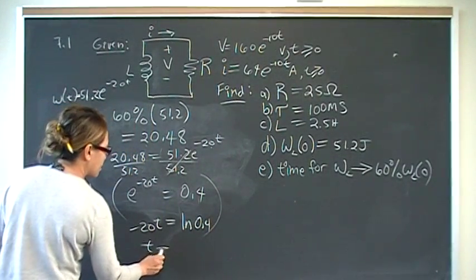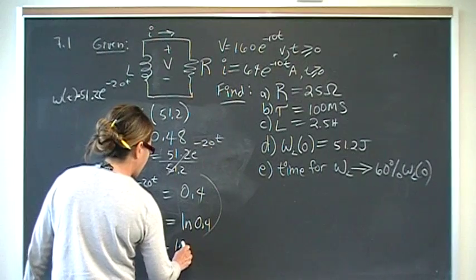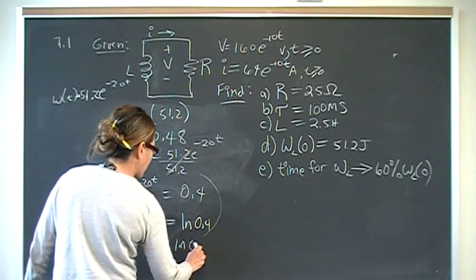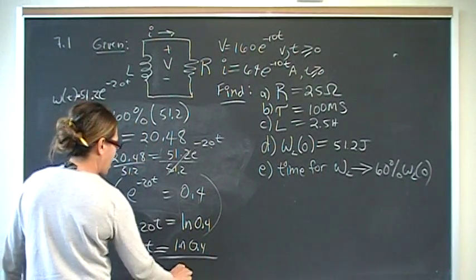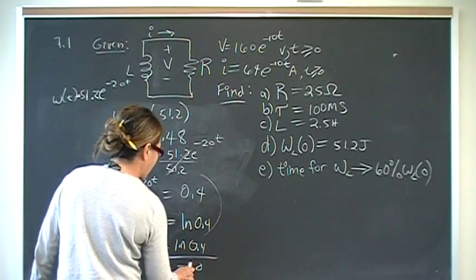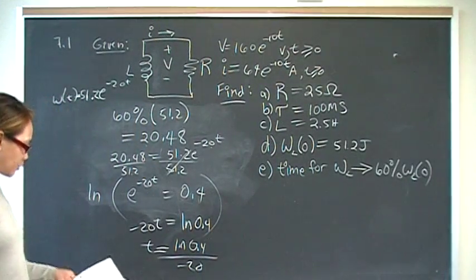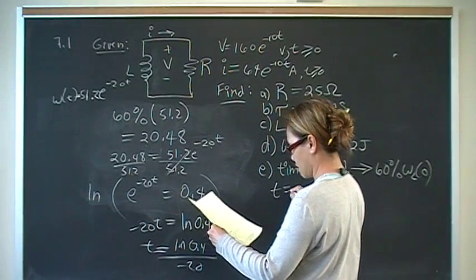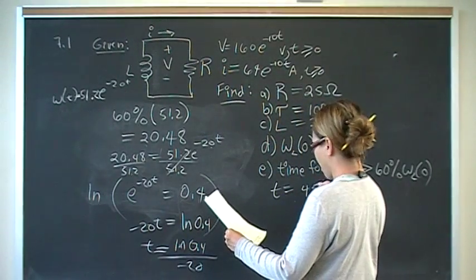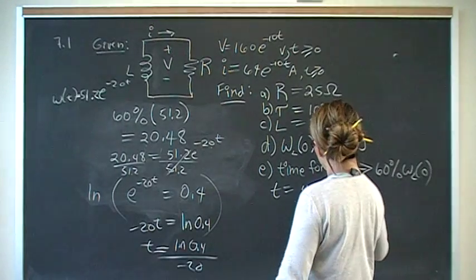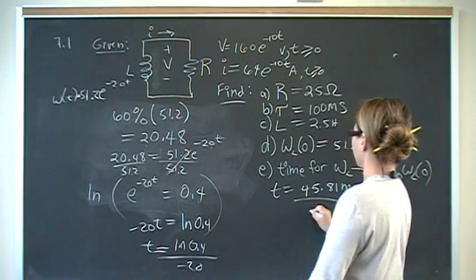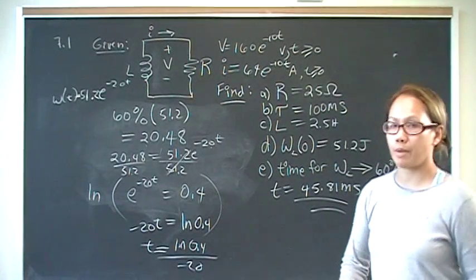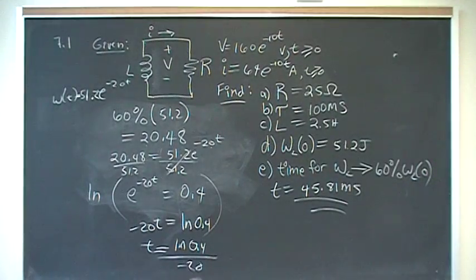So therefore, t is equal to the natural log of 0.4 divided by negative 20, and when you put that into your calculator, is going to give us t is equal to 45.81 milliseconds, and that is problem number one. Thank you.